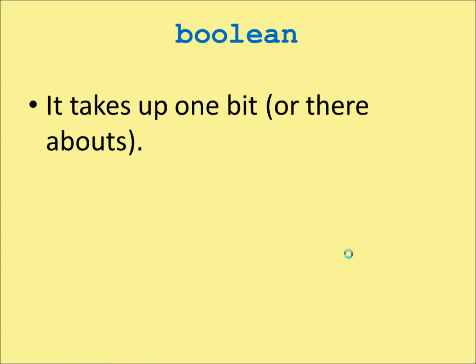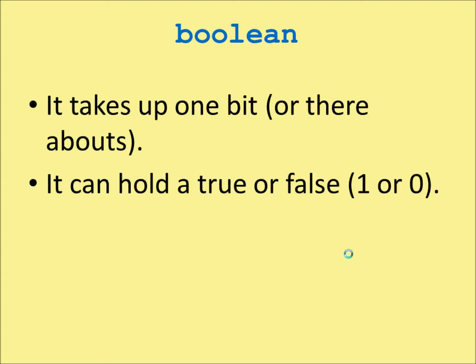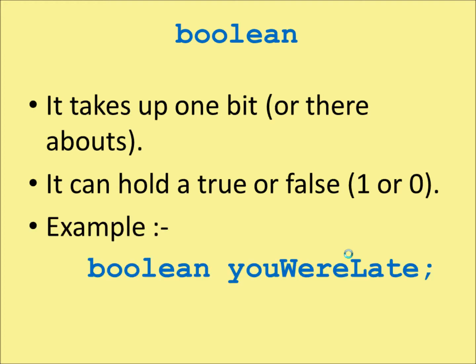Boolean takes up one bit — or thereabouts; there's actually a little bit of trickery that goes on there. It can hold a true or false value — a one or a zero. For example, you could have: boolean youWereLate. Either you were late or you weren't late — that's Boolean.